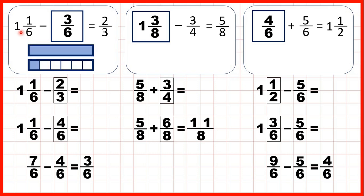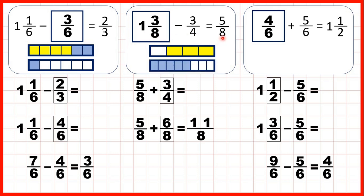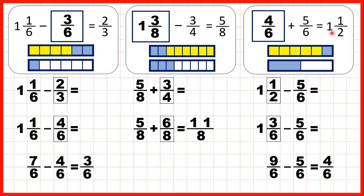So let's look at what we did here. For the first question, we knew that we started with 1 and 1 sixth and something had been subtracted to leave 2 thirds. Because 2 thirds is the same as 4 sixths, we know that the 3 sixths must have been subtracted. Then we knew that 3 quarters had been subtracted from something to leave 5 eighths. Since 3 quarters is the same as 6 eighths, putting that together with the 5 eighths we know that 11 eighths, or 1 whole and 3 eighths, must have been what we started with. Finally, we knew that 5 sixths had been added to something to make 1 and 1 half. Since 1 and 1 half is the same as 1 and 3 sixths, the 4 sixths must have been what we started with.